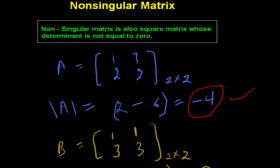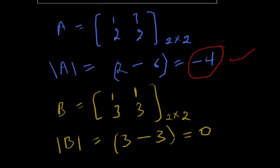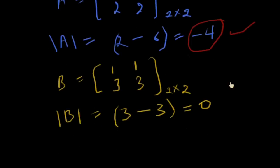In the second case, matrix B is 1 3 1 3, which is a square matrix, and its determinant is zero. So it is not a non-singular matrix. Okay, thank you.